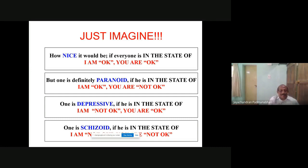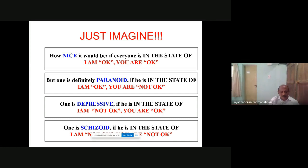Such a person is depressive. When a person is saying 'I'm not OK, my life has lost, I didn't gain anything' — that person is in a depressive mode. Another state is schizoid — 'I'm not OK, you're not OK.' Here both the people: neither am I happy nor is the other person happy. A person is schizoid when he is thinking the world itself is not good. So did you at least understand this concept of Eric Berne?